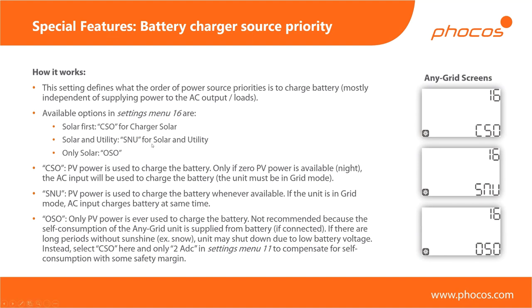Then we have Solar and Utility, where both are used simultaneously to charge the battery. Finally, we have the Only Solar setting, which absolutely forbids any charging from the AC input. There is a small warning that goes with the Only Solar setting.